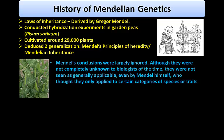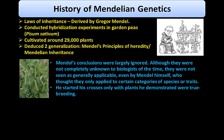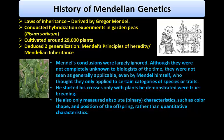Mendel's conclusions were largely ignored. Although not completely unknown to biologists of the time, they were not seen as generally applicable — even by Mendel himself, who thought they only applied to certain categories of species or traits. He started his crosses only with parents demonstrated to be true-breeding, and measured binary characteristics such as color, shape, and position of offspring. In 1900, his work was rediscovered by three European scientists: Hugo de Vries, Carl Correns, and Erich von Tschermak.